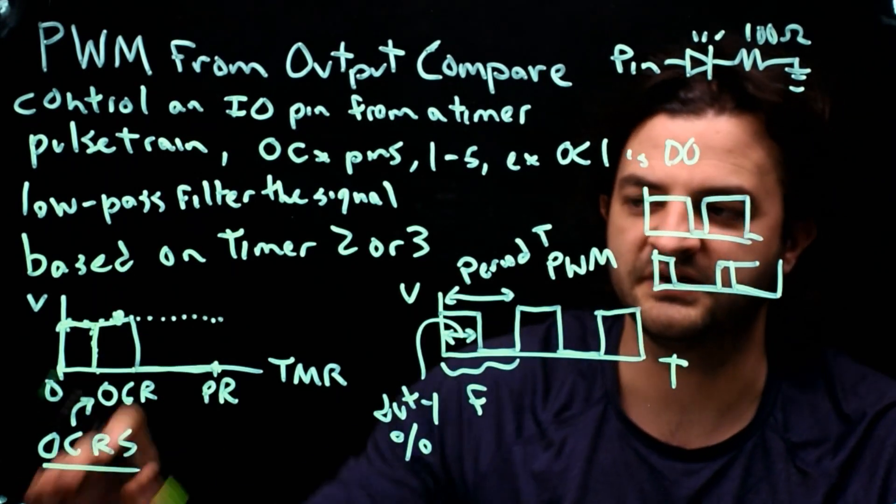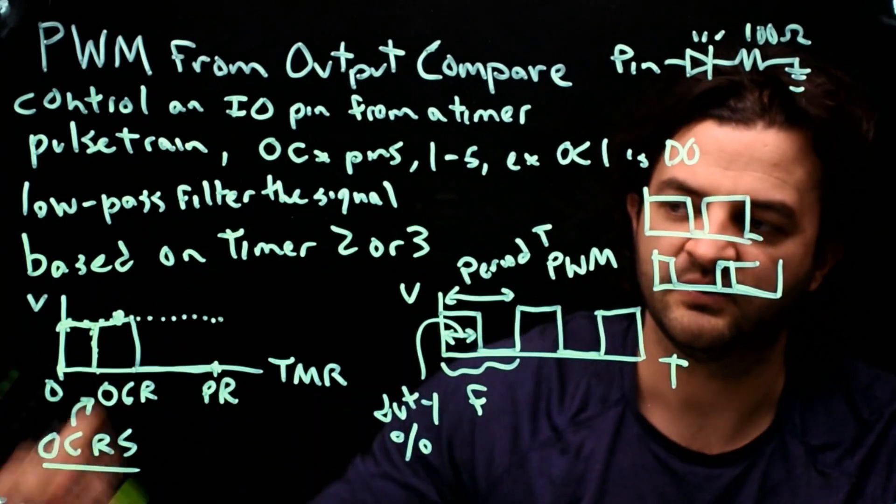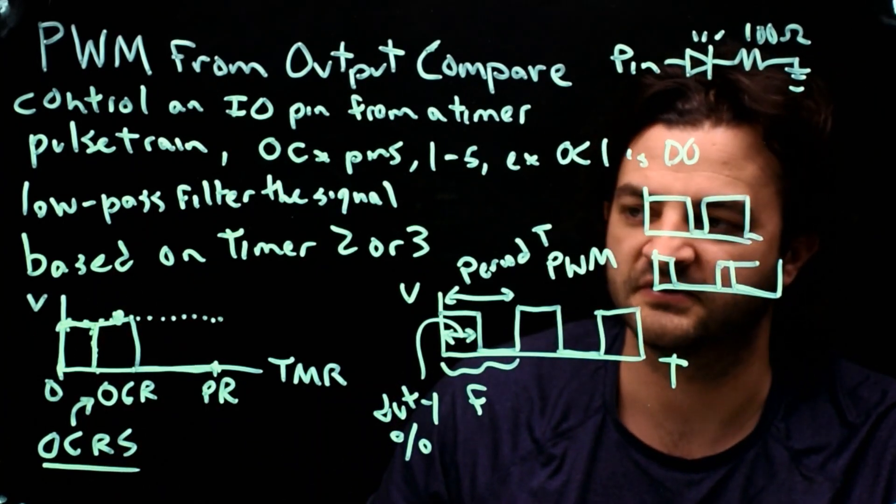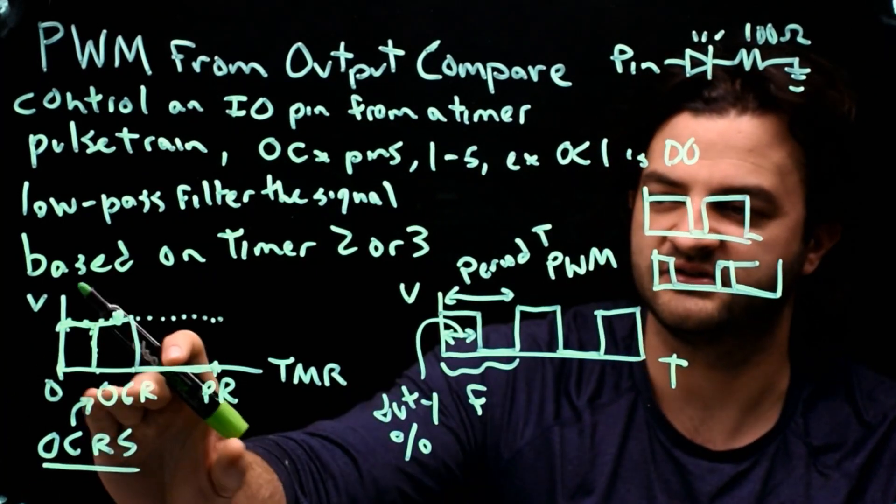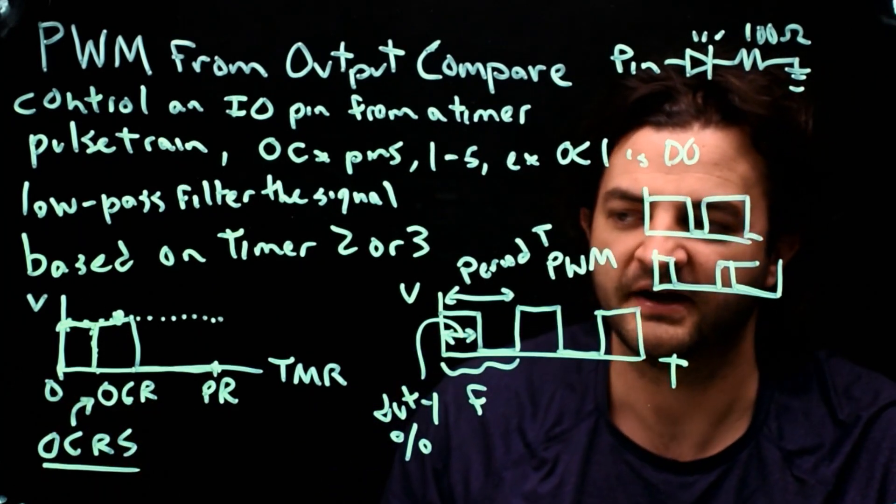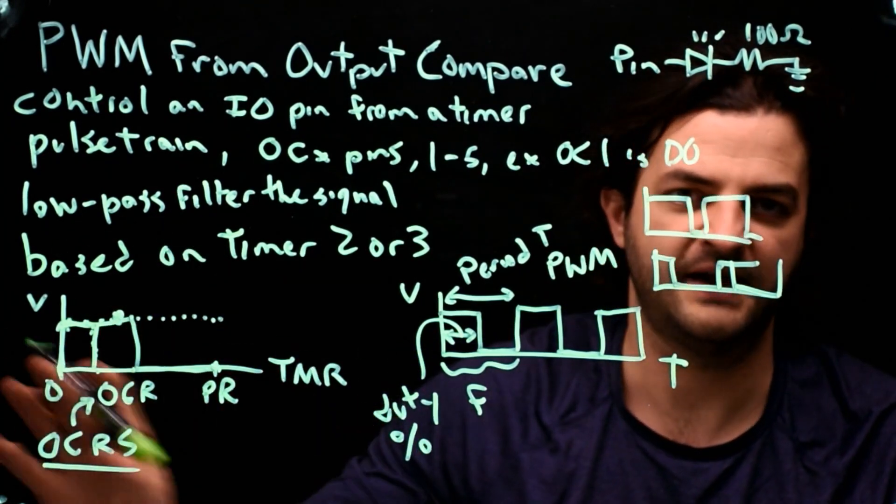So we change OCR. We never, we can initialize, sorry, we change OCRS. We can initialize OCR when we first start our code. But after that, we never touch OCR. We let this automatic change from OCRS to OCR happen by itself.